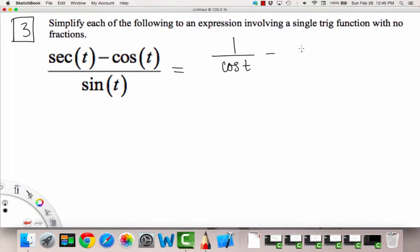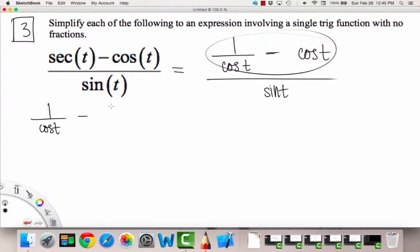Now we have one over cosine t minus cosine of t, and this is all being divided by a sine of t. So what we can do now on the top is get a common denominator for this subtraction here. So one over cosine t minus, and then we're going to multiply top and bottom by cosine, so we get cosine squared over cosine, and then divided by sine of t.